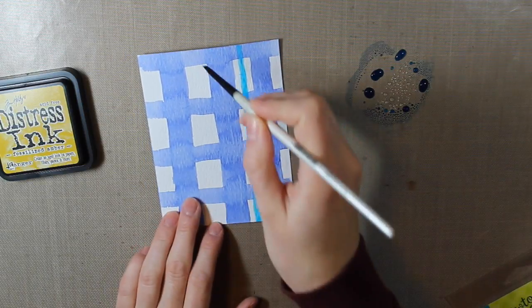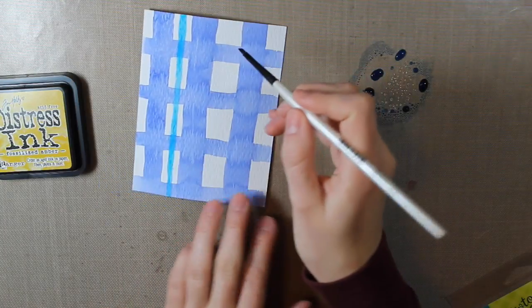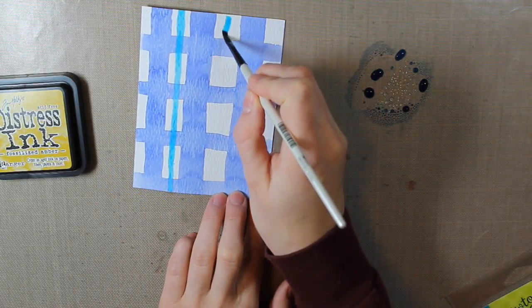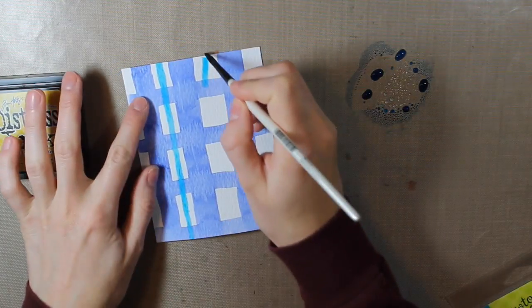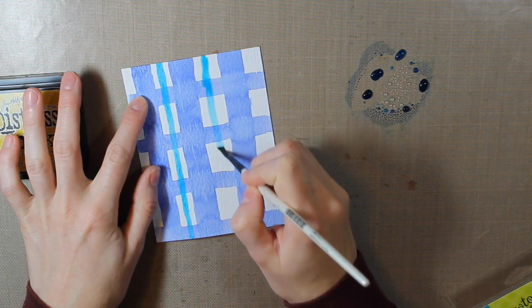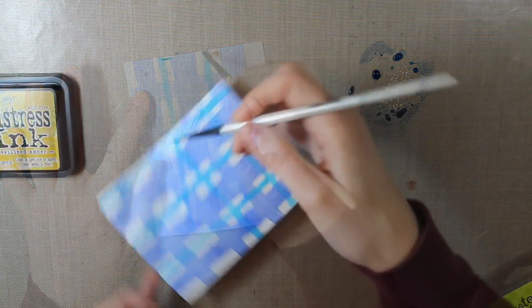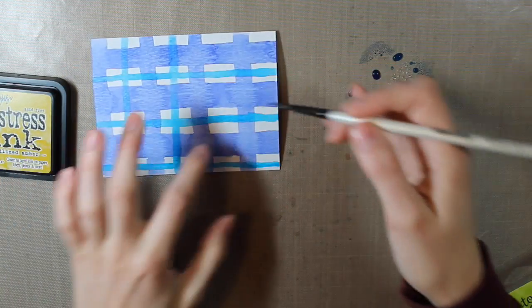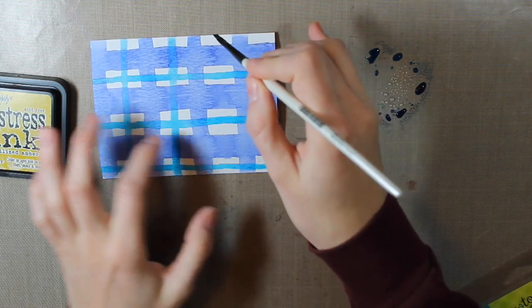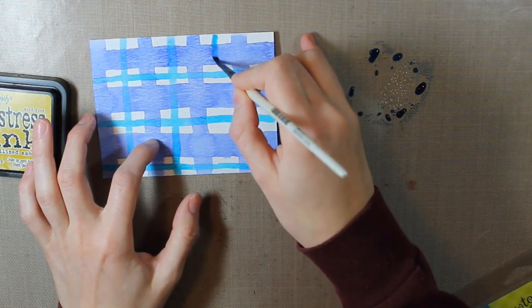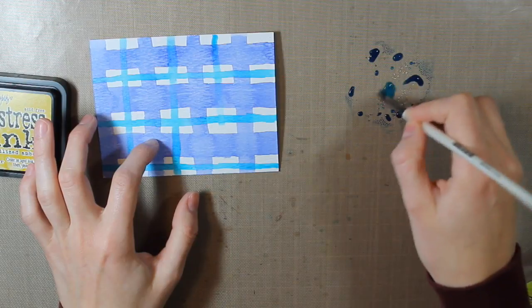So you can see I'm just straightening these lines once again trying to do this as easily as I can. I don't want to make this a really complicated process and I really want it to look handmade and more messy I guess. So then I'm doing the same thing and adding lines the other direction to create that plaid look.